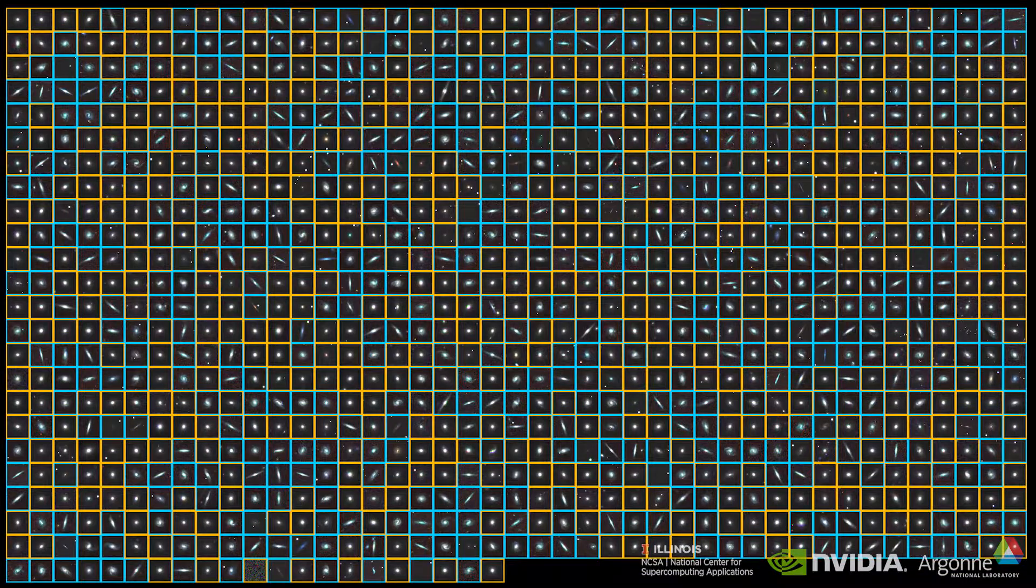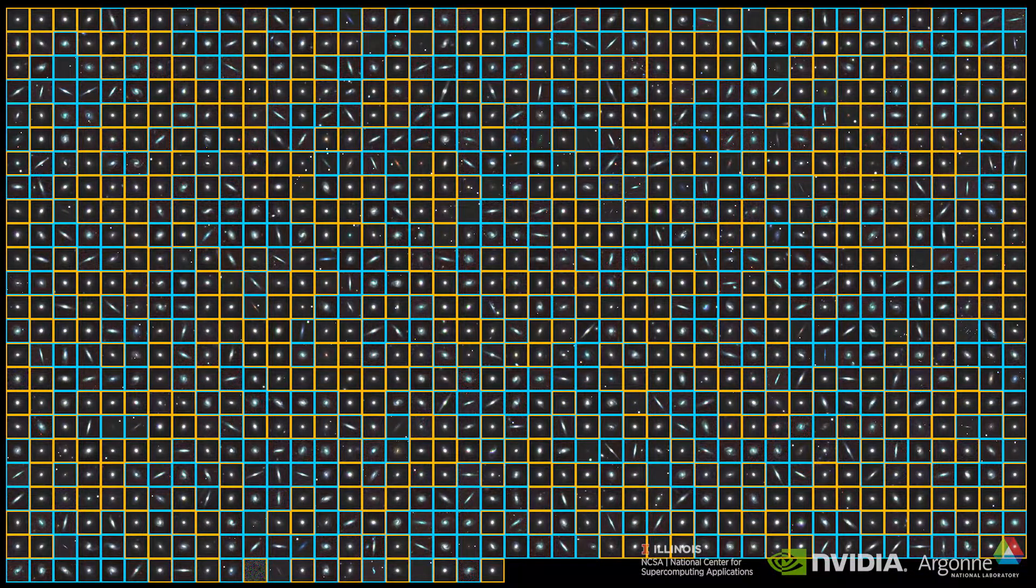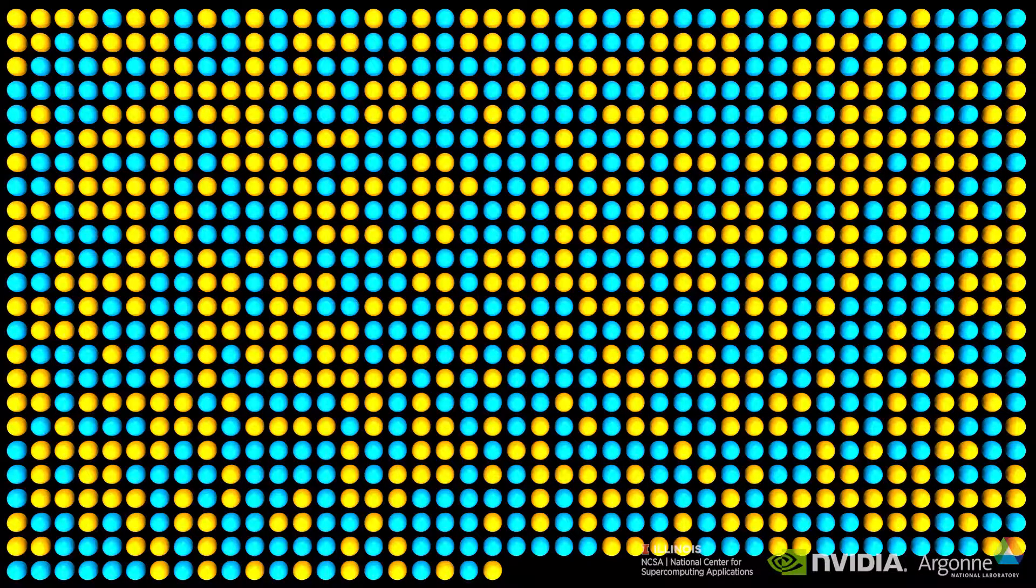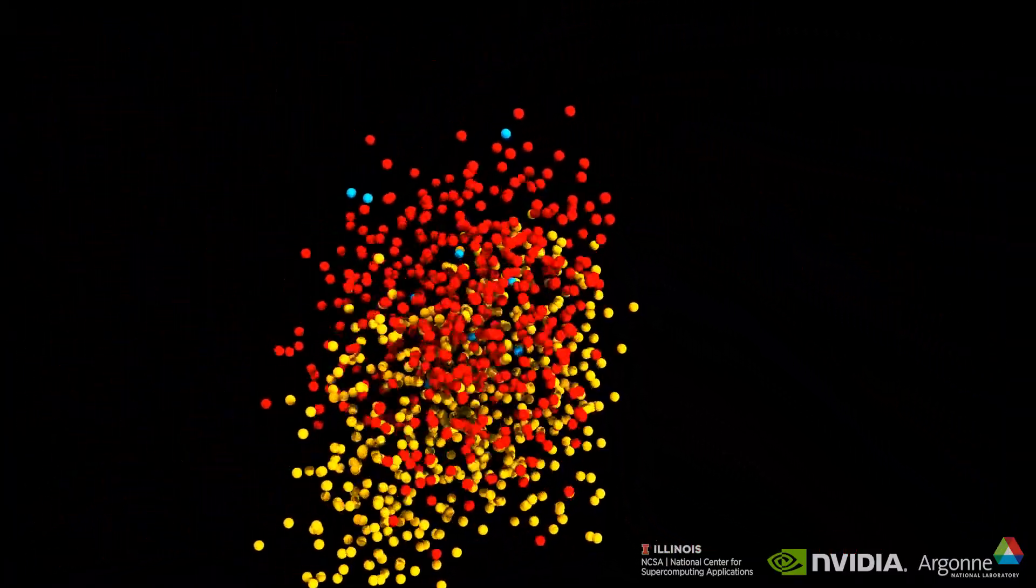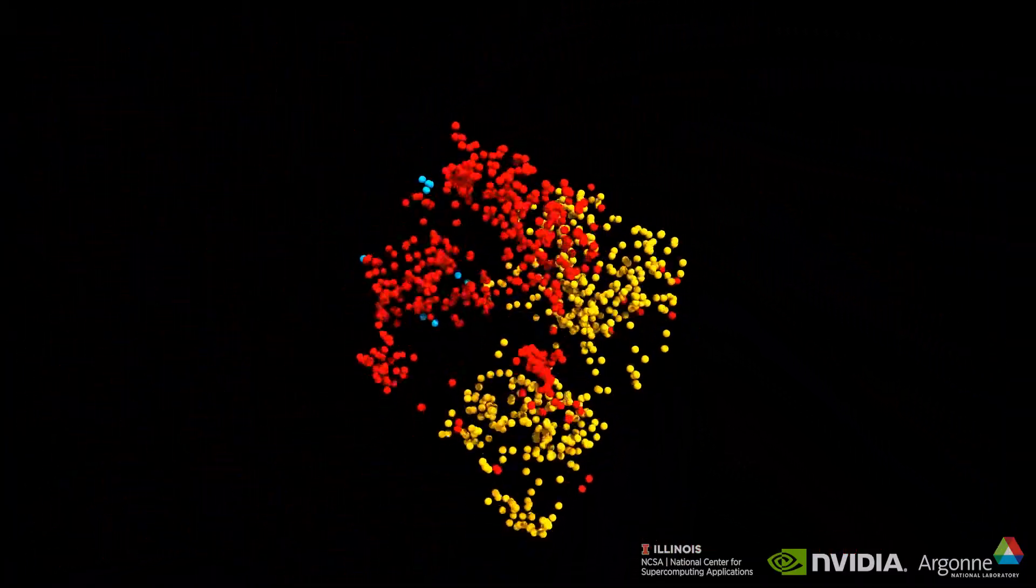Let us view the training of the network again for all of these galaxy images. Spiral galaxies are shown in blue and elliptical galaxies in yellow. In the beginning, before the network has been trained, most of the galaxies are misclassified, as shown here in red. This time we will show the condensed 3D representation for each of the images as the network learns to classify them correctly.